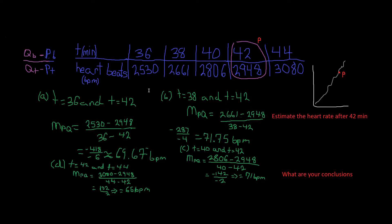In order for us to solve this problem, we must first know the rise over the run. We do that by using this equation: qb, which means beats per minute, minus pb, which is beats per minute, divided by qt, which is time, minus pt, which is time.